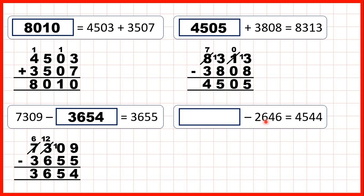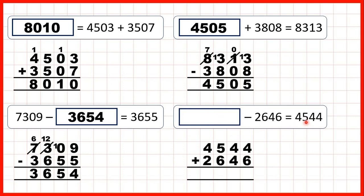Now, something minus 2,646 equals 4,544. Here it's the first number — the minuend — in our calculation that's missing. And remember, subtraction problems can be read backwards as addition problems. So this time, because it's the first number that's missing, we need to add to find our missing number — we need to work out 4,544 plus 2,646.